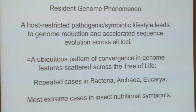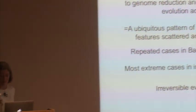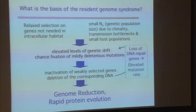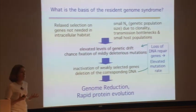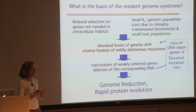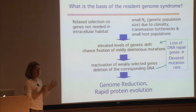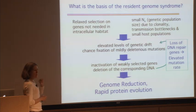This pattern is all over the tree of life — most cases are in bacteria but even archaea and eukaryotes show parallel cases. The most extreme cases are these insect nutritional symbionts, and it's irreversible: you don't go back once you go down this pathway; you can only get smaller. What causes it? Once you're living inside an insect cell, relaxed selection means you don't need many genes anymore — you don't need to break down substrates or handle the same ecology — so mutations accumulate and those genes are lost.